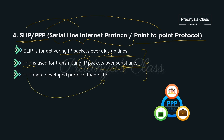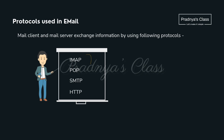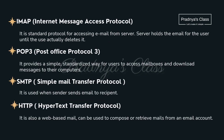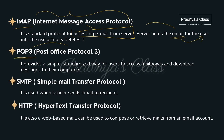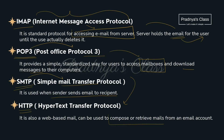Now let's discuss protocols used for sending email. The first is IMAP, Internet Message Access Protocol, used for accessing email from the server and holding email for the user. The second is POP3, Post Office Protocol 3, which allows users to access mailboxes and download messages. The third is SMTP, Simple Mail Transfer Protocol, used when a sender sends mail to a recipient. The fourth is HTTP, which is also used for composing and retrieving mail.